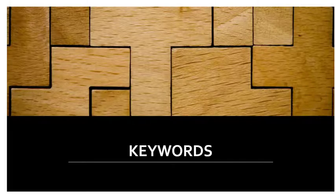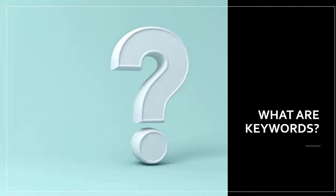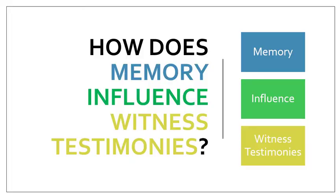We're going to start off with keywords. Keywords are terms that describe a topic. These are the search terms you will use when you go looking for information. You can never have too many keywords. We don't type in a sentence or full question into our searches in databases because it skews the results and makes your search less effective. We will break up our question to highlight the most important information. You can easily start by pulling them from your research question.